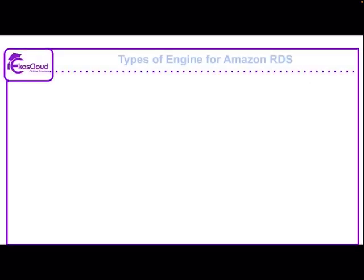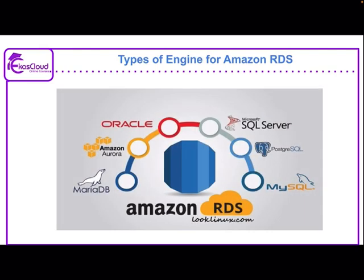Now we'll see the types of engine for Amazon RDS. We have these types of engines which help us to operate Amazon RDS. Examples are MariaDB, Amazon Aurora, Oracle, Microsoft SQL Server, PostgreSQL, and MySQL. These are all the engines which help Amazon RDS to operate in a smooth way.